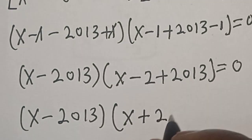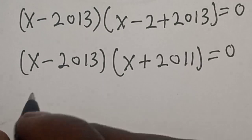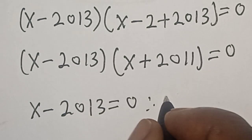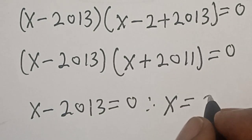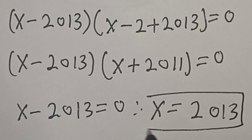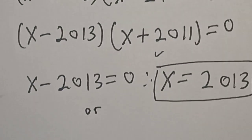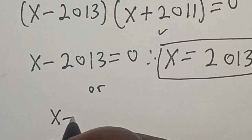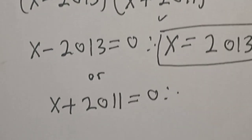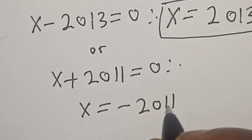We now have two cases. Case one: x minus 2013 equals zero, therefore x equals 2013. That is the first value of x. Case two: x plus 2011 equals zero, therefore x equals minus 2011. That is the second value of x.